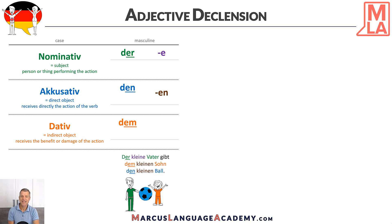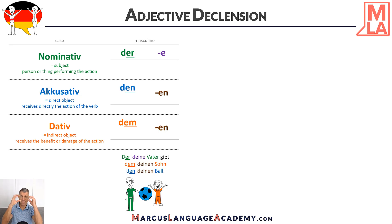Therefore, it's den kleinen Ball. The same thing is for dative — because it's not anymore der, it's dem, so we need to add -en. My explanation is this: because der is the original masculine article, we add just -e to the adjective. And in accusative and dative, we add -en.